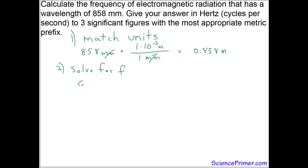With this, we can solve the formula C equals lambda times F for frequency, which is F equals C divided by lambda, then plug in the information, the numbers that we have: three times ten to the eighth meters per second divided by 0.858 meters. The meters are going to cancel. We end up with 3.50 times ten to the eighth per second.